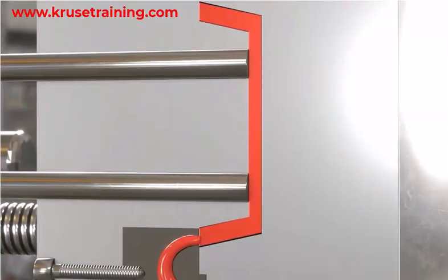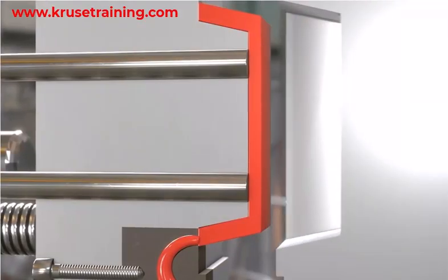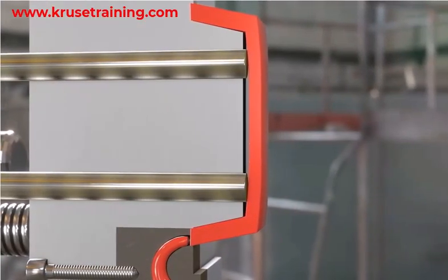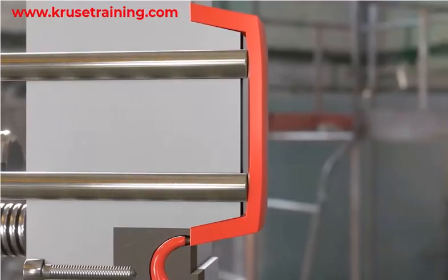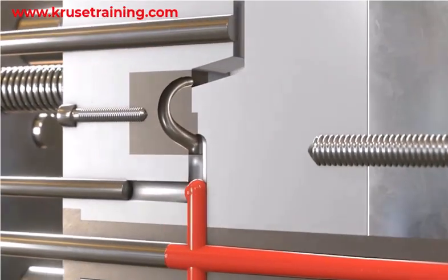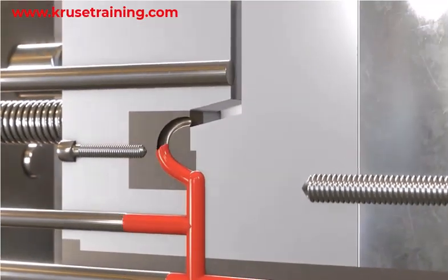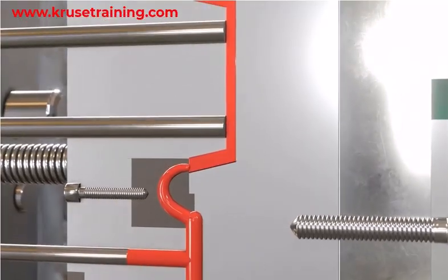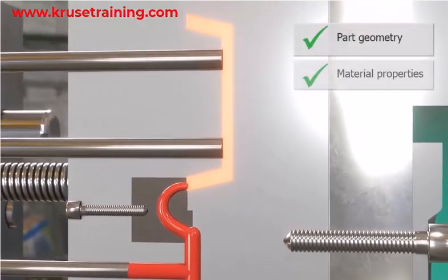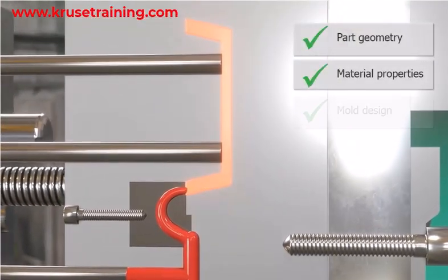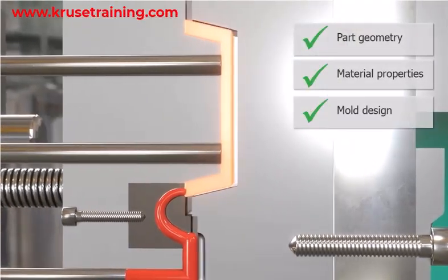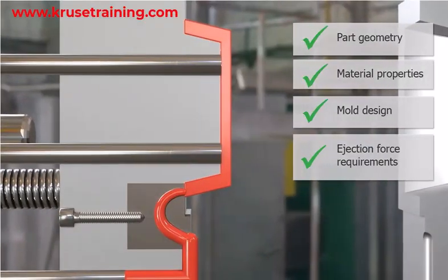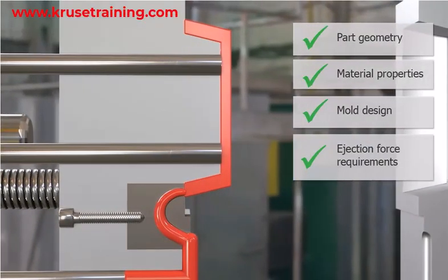The proper design and operation of the ejector system are crucial to ensure smooth ejection of molded parts without causing any damage or deformation. It is important to consider factors such as part geometry, material properties, mold design, and ejection force requirements when designing and implementing the ejector system.